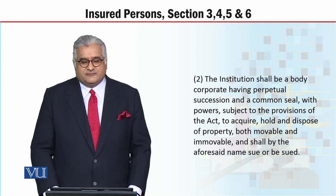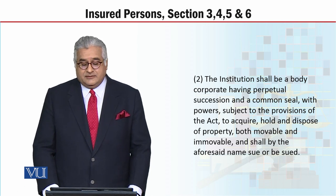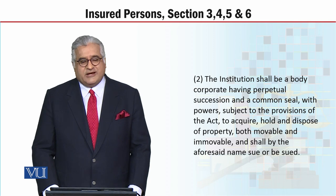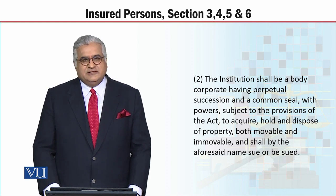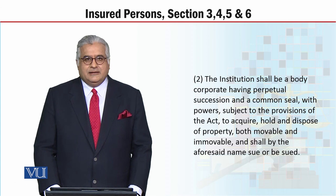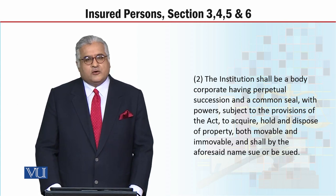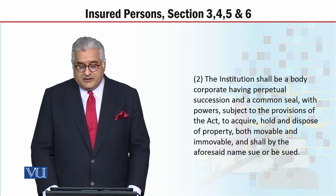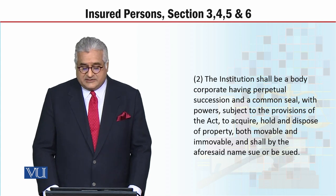Yeh jo institution federal government ne banaya hai, uske baare mein yeh hai ke the institution shall be a body corporate. Body corporate kya cheez hoti hai? Institution ek body corporate hai, iska matlab hai yeh ek artificial legal person hai, aur yeh legal fiction ke tait create hua hai, aur iski ek personality hai jis ko sue kiya ja sakta hai, yeh apne paas ek common seal rakhega, aur iske paas powers hongi, aur isi ke naam pe contracts honge, isi ke naam pe sari activity hogi.